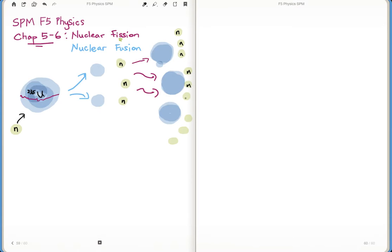This is very dangerous if it's not being controlled, because the amount of energy released is huge. If this chain reaction is not properly controlled, the huge amount of energy will be released in a short time, and therefore you have this explosion.